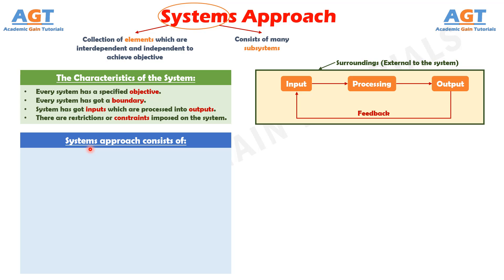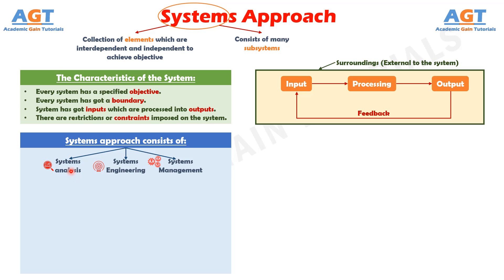Systems approach consists of systems analysis, systems engineering, and systems management. Systems analysis includes investigation of system objectives, selection of criteria for evaluating alternative solutions, examination of the feasibility of proposed solutions, evaluation of feasible solutions, and selection of the optimal solution.